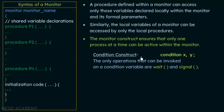Condition constructs are declared as 'condition x, y'. The only operations that can be invoked on a condition variable are wait and signal. We declare x and y as condition variables, and in these condition variables we can invoke only two operations: wait and signal — similar to semaphores, but here they form an extra layer needed alongside the monitor structure.